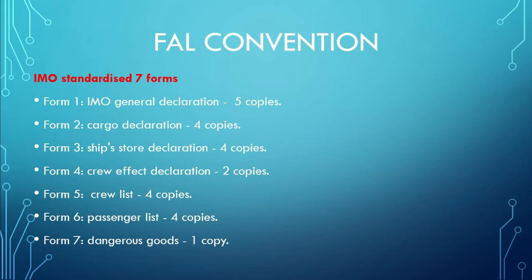The 7 IMO standardized forms are: Form 1 — IMO General Declaration, 5 copies; Form 2 — Cargo Declaration, 4 copies; Form 3 — Ship's Stores Declaration, 4 copies; Form 4 — Crew Effects Declaration, 2 copies; Form 5 — Crew List, 4 copies; Form 6 — Passenger List, 4 copies; Form 7 — Dangerous Goods, 1 copy.